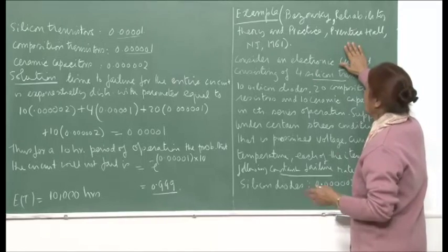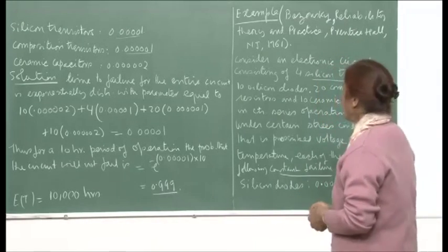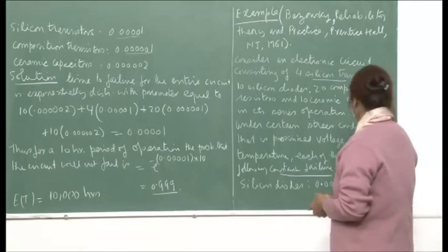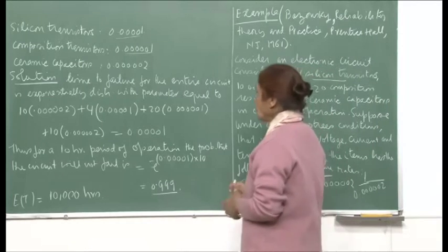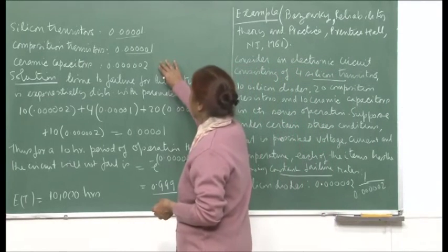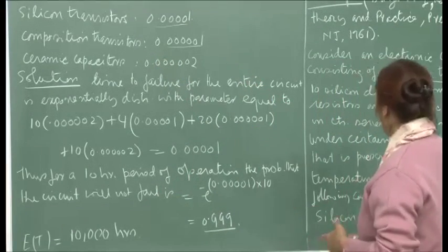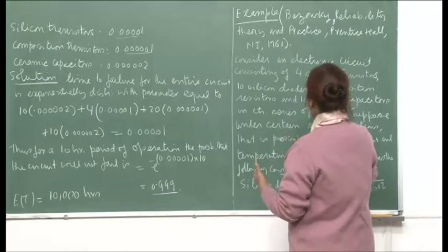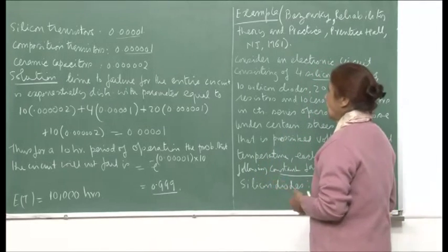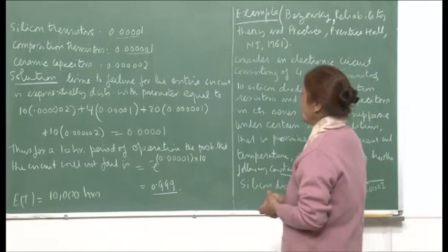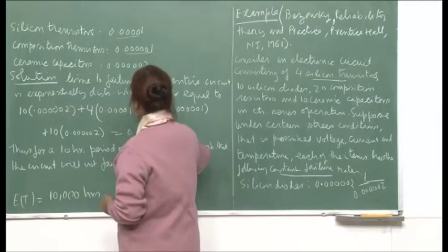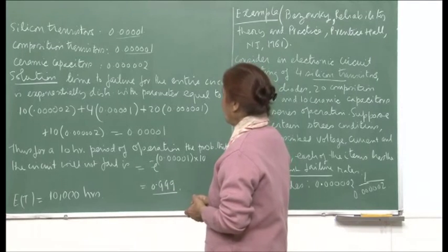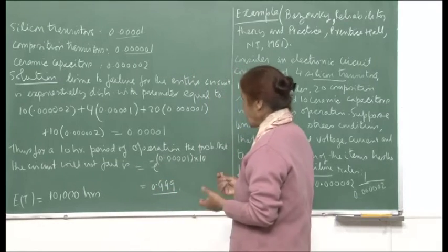Since they are hooked up in series and each follows an exponential law with independent functioning, we simply add up the parameters to get the parameter for the failure law of the whole system. That system failure law will also be exponential. This can be easily shown for any number of components: many components in series each following an exponential failure law gives an exponential failure law for the system with the parameters added up.